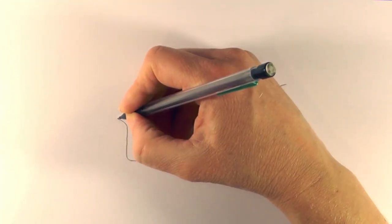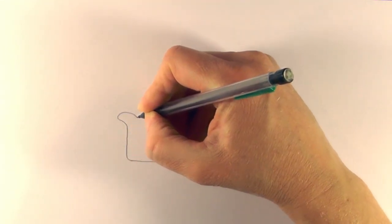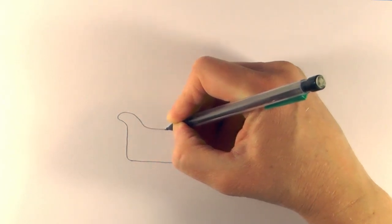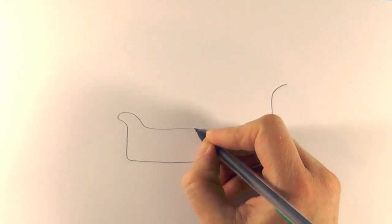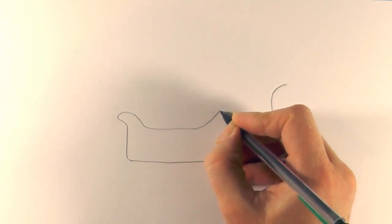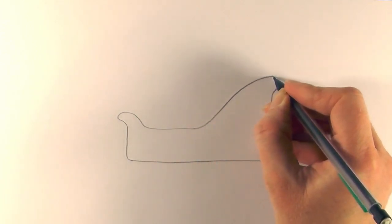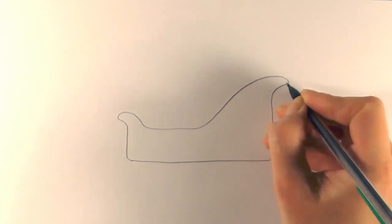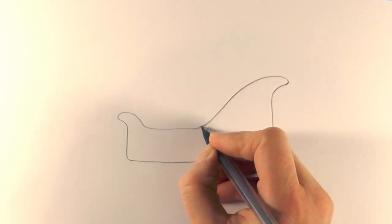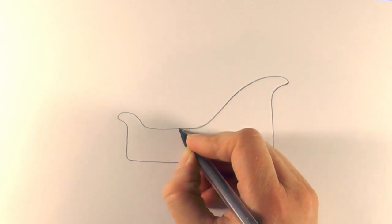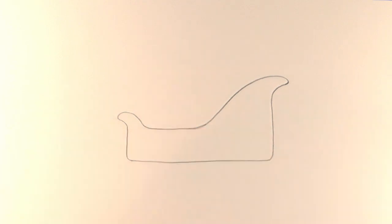And then we just bring that around and down, just do a little bit of a flatten off there with our line, and then we just curve it up again and take it up and around and curve it to join that line up there, just like that.